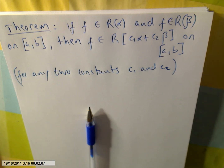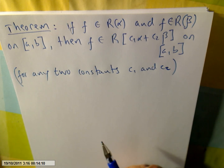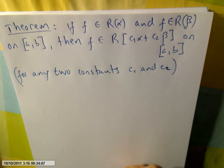This video we will still be on the linear properties of the integral. Last time we mentioned the fact that if F was Riemann integrable on α and G was also Riemann integrable on α on a certain interval [a,b], then C₁·F plus C₂·G was also Riemann integrable on the same interval [a,b].